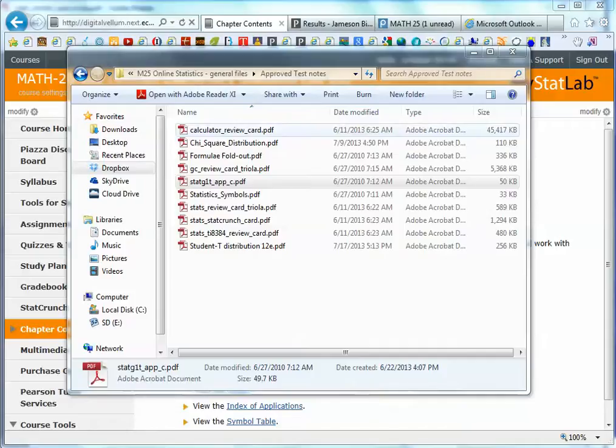One is called the calculator review card, another one is called the GC review card, that's graphing calculator review card. It's pretty much the same, but it's just a different edition. This one's from 2010, and then this one's from 2013, it's a newer one.